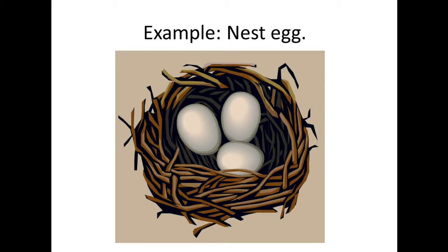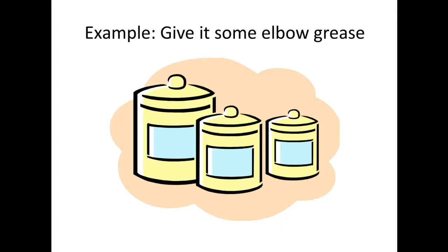Another example: "he has a nest egg" means savings — money in the bank — it has nothing to do with eggs. And this is my favorite, because it's a real story. I remember there was a young woman who was trying to clean something and a neighbor said, "you have to give it some elbow grease." So she went to a store to try to buy a product called elbow grease, only to discover it does not exist. When we say "give it some elbow grease," it means work harder at it — put some muscle into it.